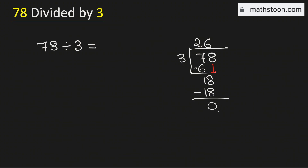As we have obtained the number 0 and there is no number to bring down, we will stop. Therefore, 78 divided by 3 is equal to 26, and this is our final answer.